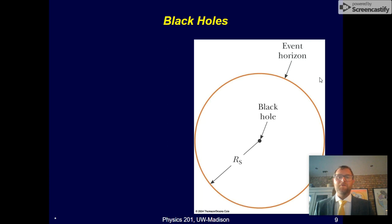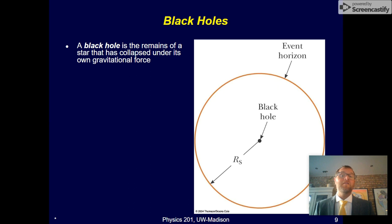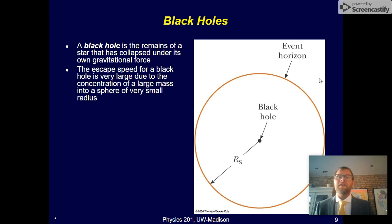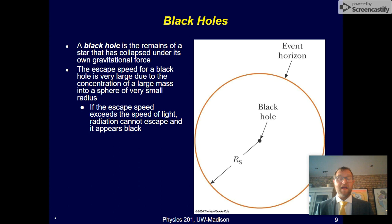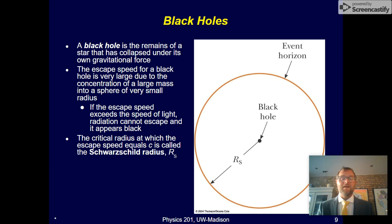Let's think about black holes—the extreme case. Black holes are the remains of a star that's collapsed under its own gravitational force. The escape speed for a black hole is so large due to the concentration of this large mass into a sphere of very small radius that the escape speed exceeds the speed of light. Therefore, radiation cannot escape and it appears black. The critical radius is known as the Schwarzschild radius—the radius at which escape speed equals the speed of light.